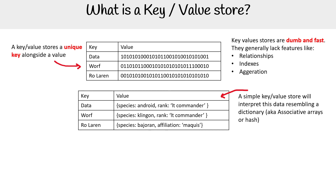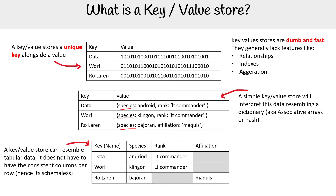Even though it looks like, if this was a relational database, you could see these as kind of like columns. And so if we kind of did that, that's how a key value store can mimic tabular data. But the thing is, there is no consistency between the rows — hence it is schemeless.